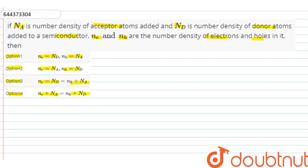here number of electrons given is equal to Ne. NH is the number of holes. ND is the number of donor atoms added.